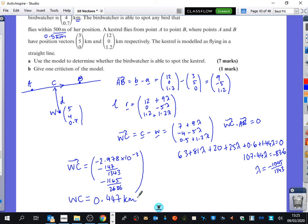So we need a conclusion now. Does the birdwatcher spot the kestrel? So we say yes, because WC is less than 0.5 kilometers. So the birdwatcher does spot the kestrel. It just happened to be some quite unpleasant numbers there, but you can store numbers in your calculator, or something like that.